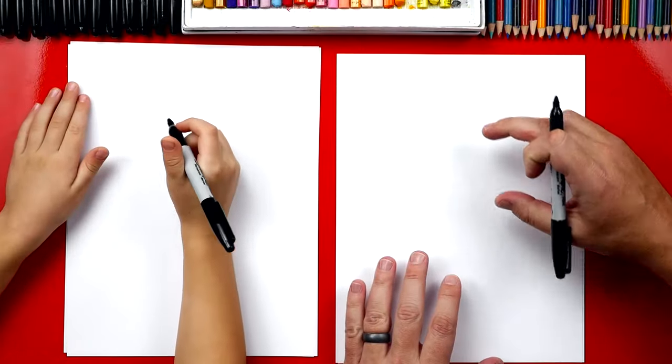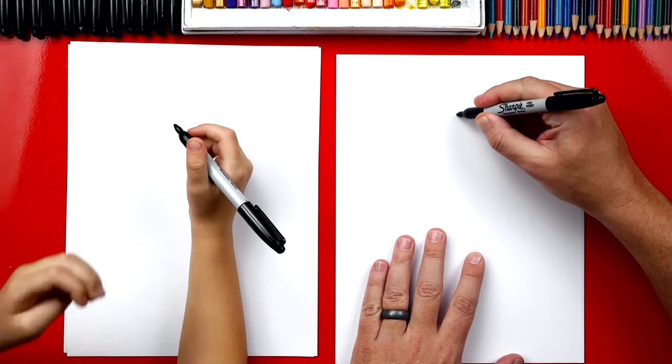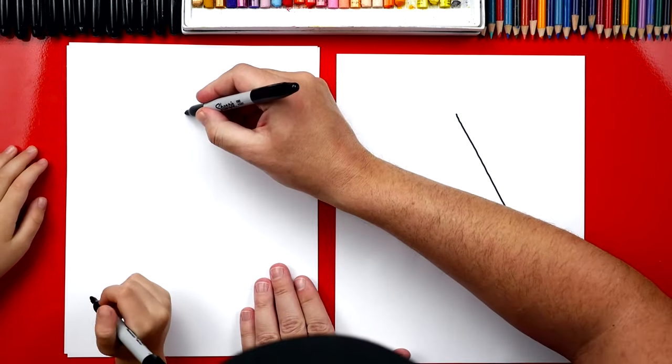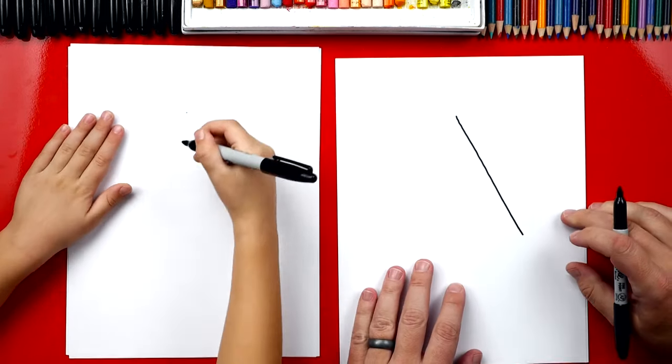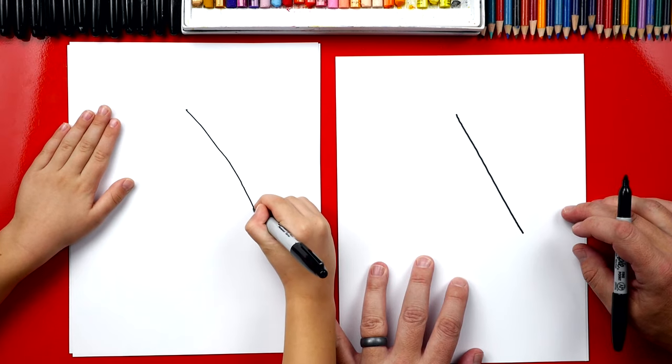We're going to first start by drawing the sticks to our kite. We'll draw one stick that's diagonal, coming down like this. Start right here and draw a diagonal line that comes down. We're going to draw it flying up in the air. Good.